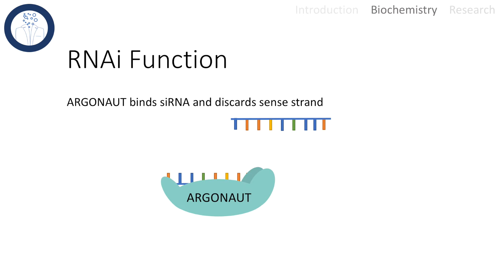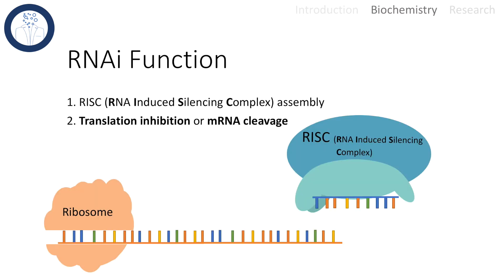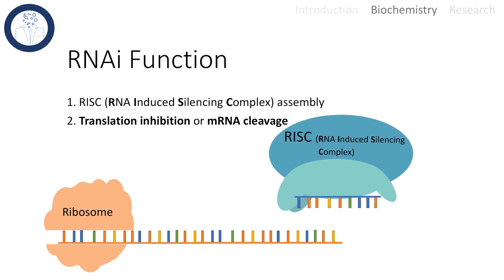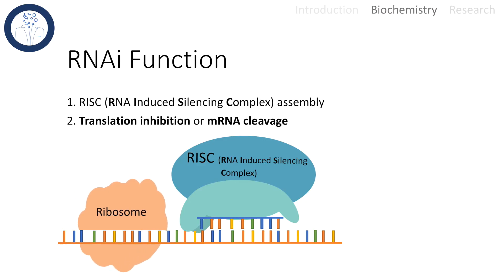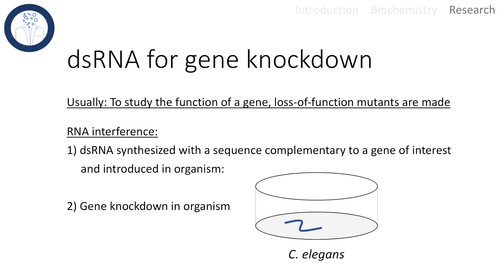Together with other proteins, Argonaute and the antisense RNA form RISC, an RNA-induced silencing complex. Since the antisense strand is complementary to the sense strand of the mRNA, the RISC complex is able to pair with the mRNA to either inhibit translation or cleave the mRNA. Both results lead to silencing.